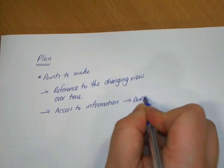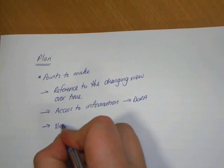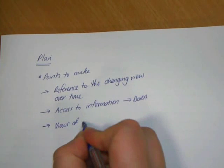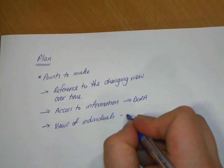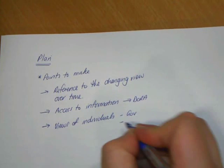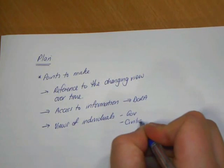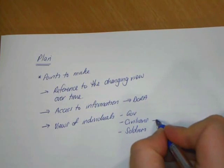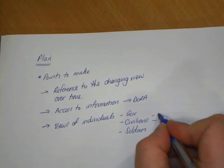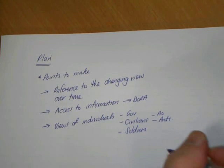The other thing you're going to have to look at is access to information, so you can make some reference to DORA. It's not looking for your own knowledge, but your own knowledge is implied by the way you answer the question. Also, it's looking for the views of individual groups of people — for example, the government, civilians and soldiers. What were their opinions and how did they change? You've got different views from civilians: both a pro-war and an anti-war civilian.